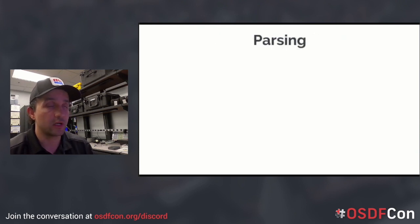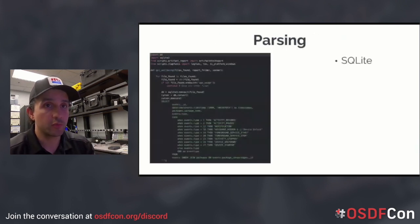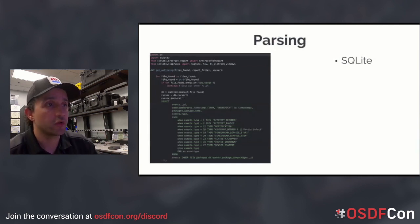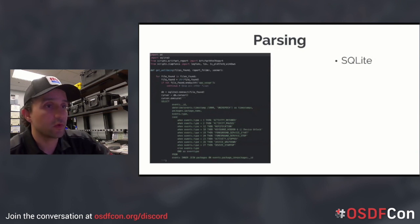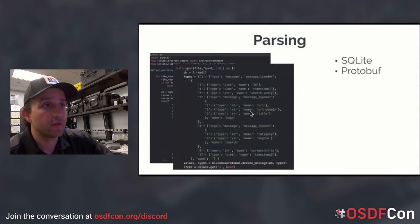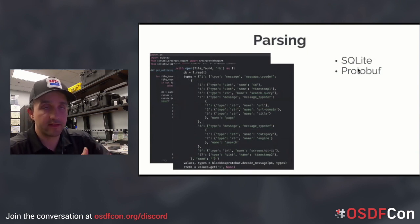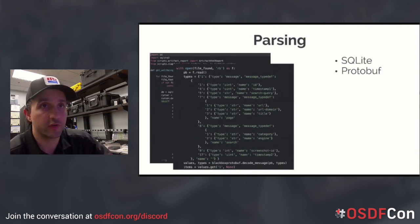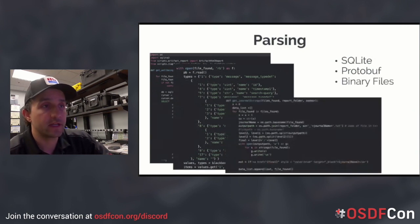After it finds the artifacts, it calls a script to parse them, then gives you the reporting options. You can do SQLite — as you can see, there's a SQLite query on the left — you can do protobuf, binary files; you name it, it's Python so it's open. The tool itself has different artifact scripts you can look at as examples.